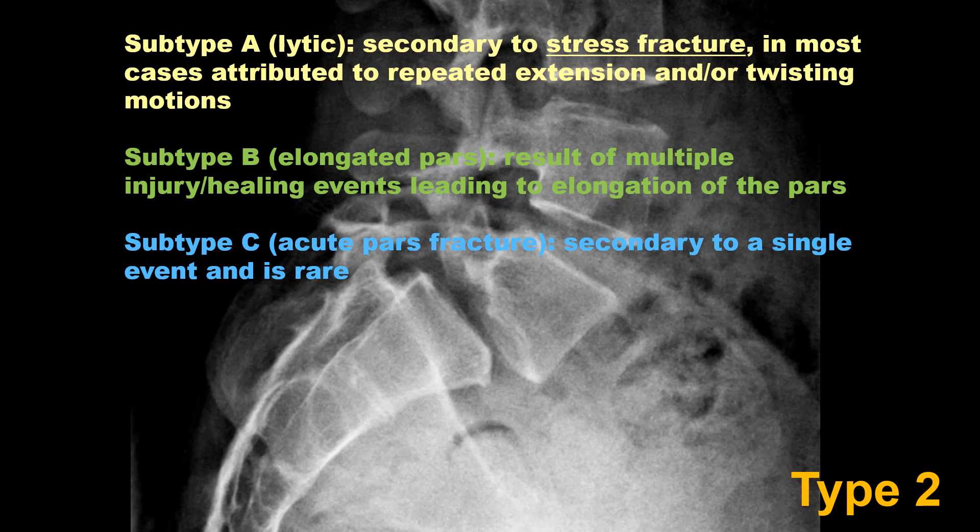There are three subtypes of a type 2 spondylolisthesis. Subtype A is due to a stress fracture — very common. Subtype B is due to an elongated pars, usually elongated due to multiple injury or healing events. Subtype C is an acute pars fracture from a single event, and that is typically rare.